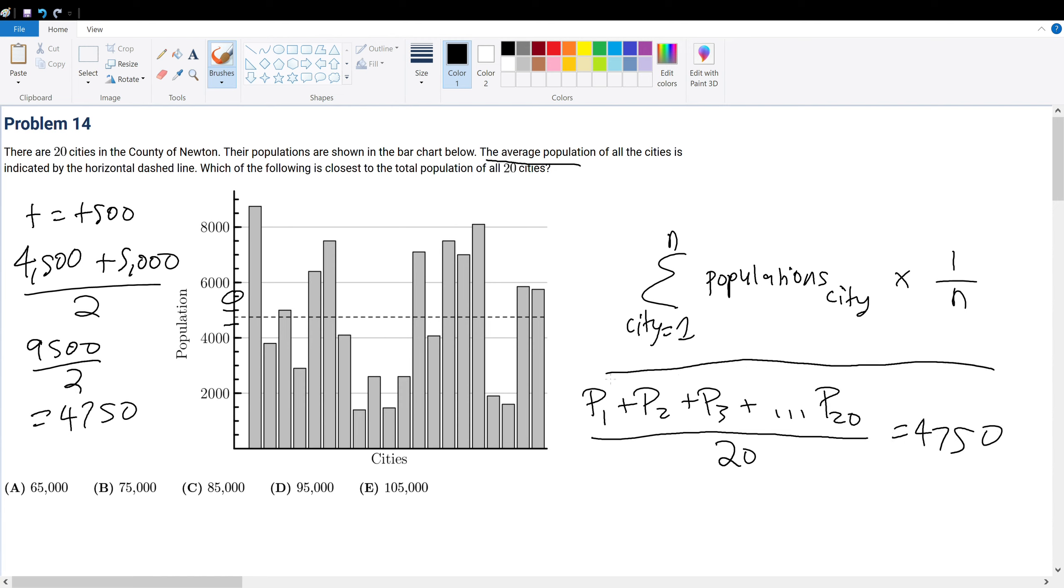But wait, what do you notice about this expression? We're trying to find the total population. The total population is just the summation of P1 all the way to P20. So if we just multiply the average with the number of cities present, we get the answer. Notice how much quicker this is than counting every single city. That would be a large waste of time. Just by understanding definitions alone, you can get very far in competitive math.